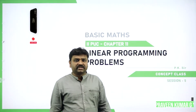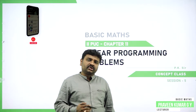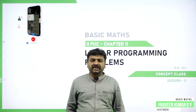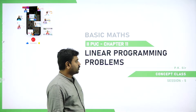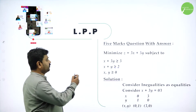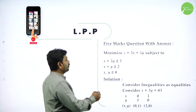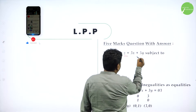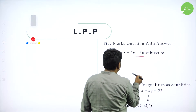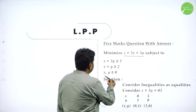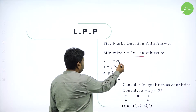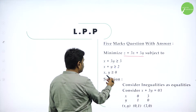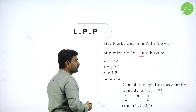Welcome to the session, dear students. Today we will go ahead with important concepts of linear programming. They want you to minimize Z equal to 3X plus 5Y, subjected to X plus 3Y greater than or equal to 3, X plus Y greater than or equal to 2, and X, Y greater than or equal to 0.